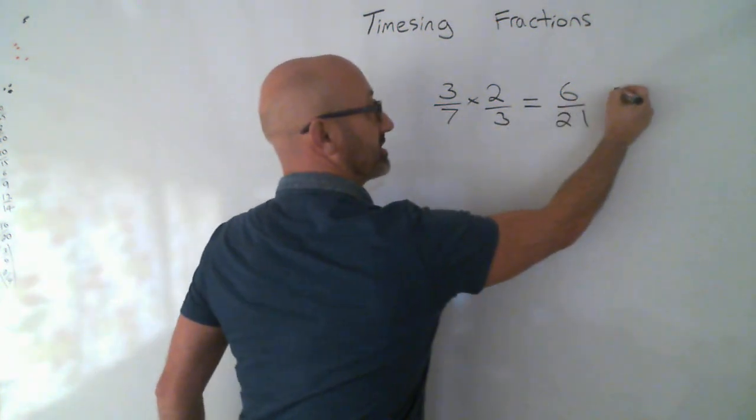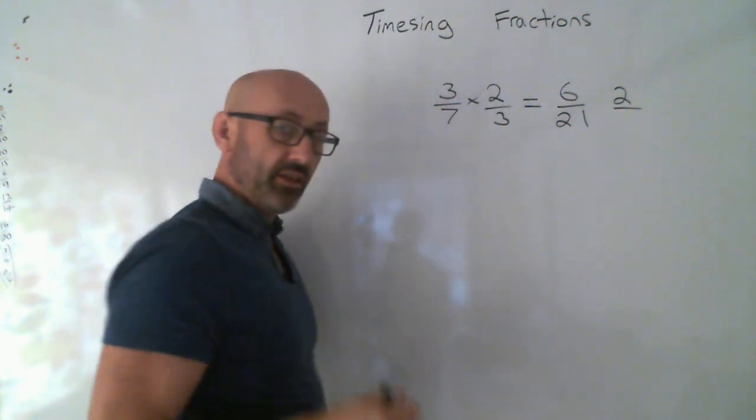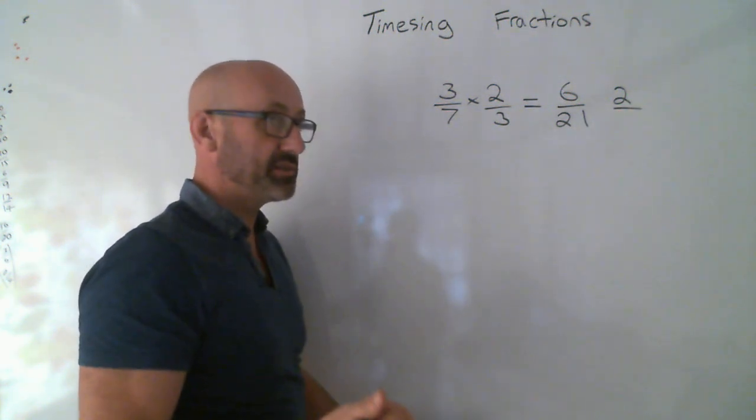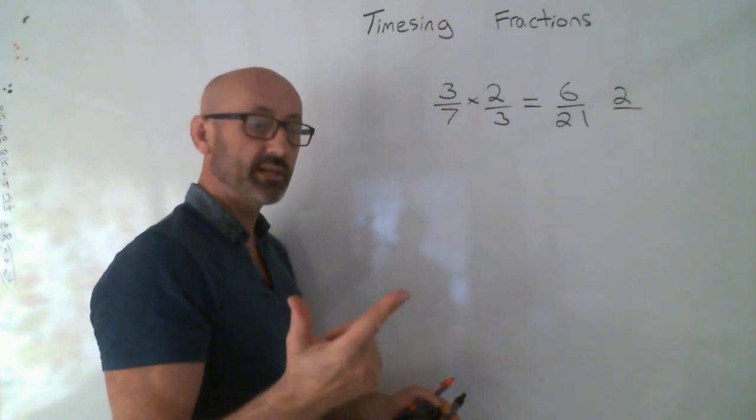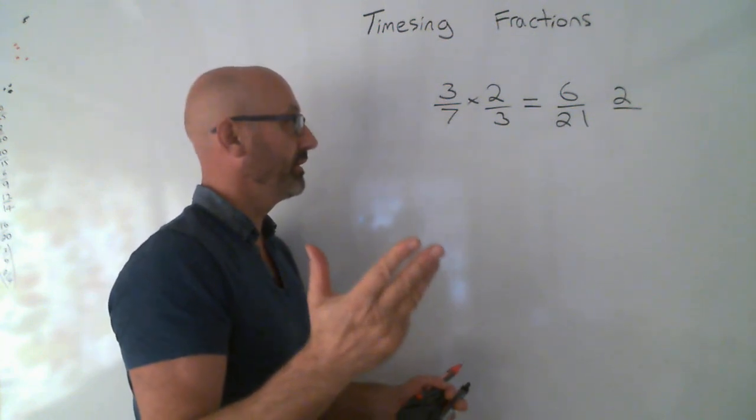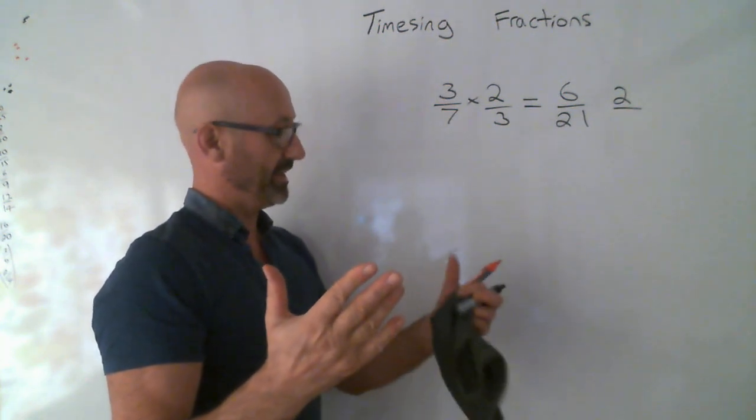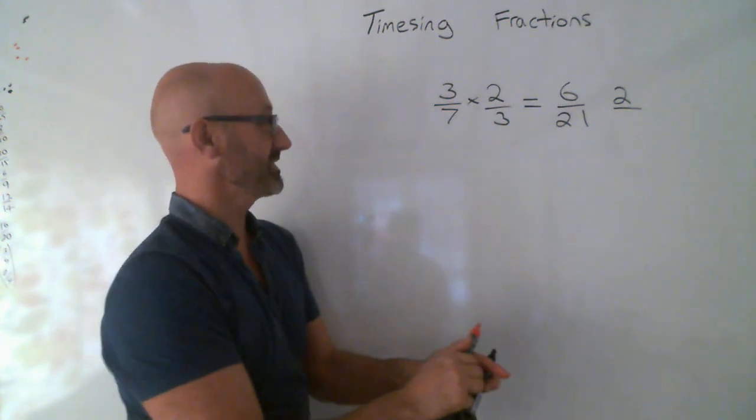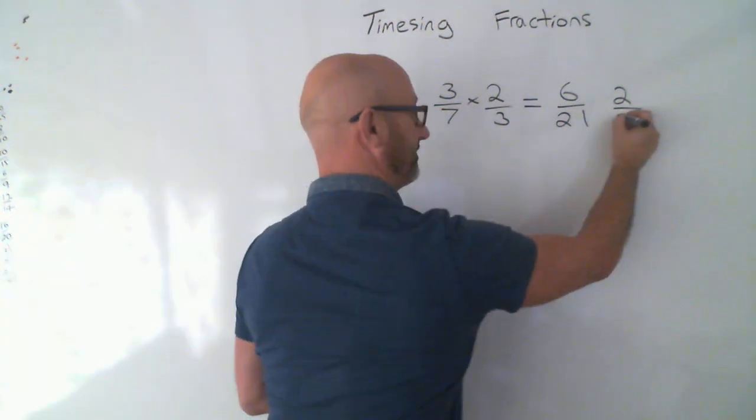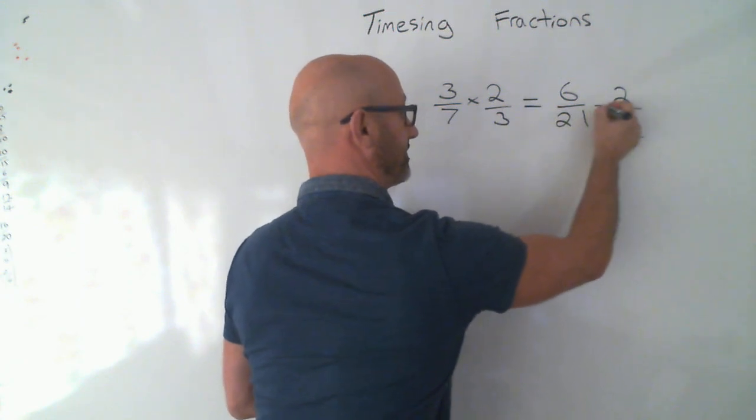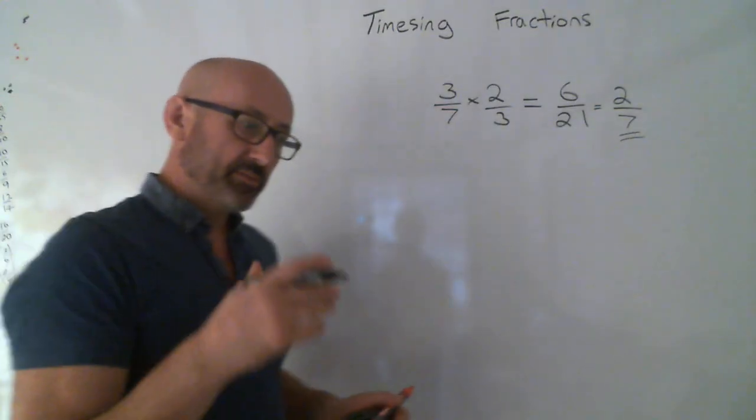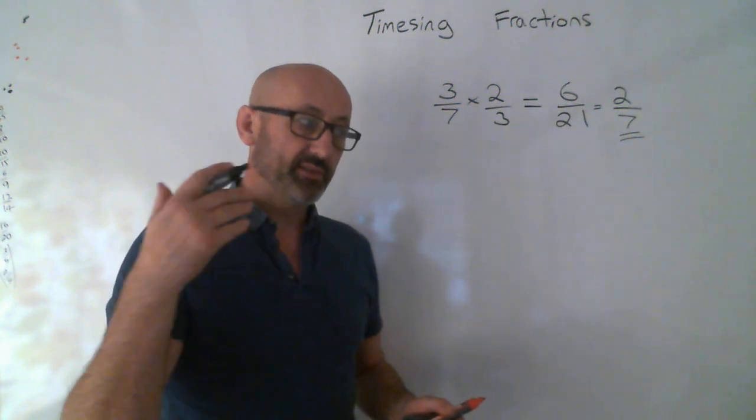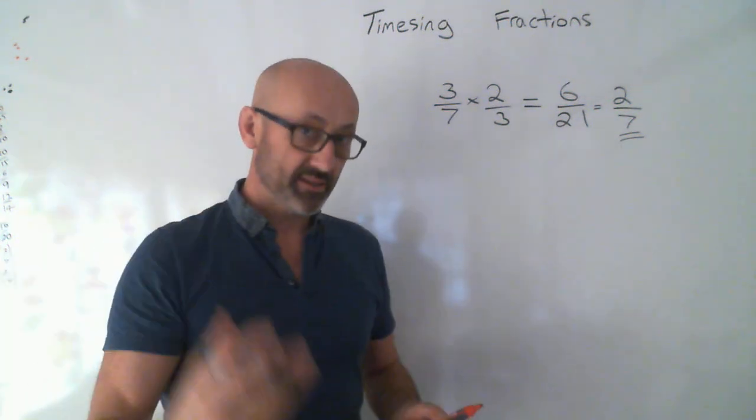3 fits into 6 twice. 3 fits into 21. Don't forget to use your fingers. 3, 6, 9, 12, 15, 18, 21. So 7 times, 2 sevenths. Times the tops, times the bottoms. If they will simplify, then simplify them.